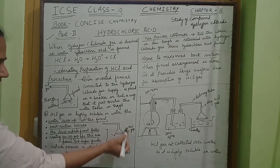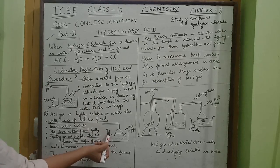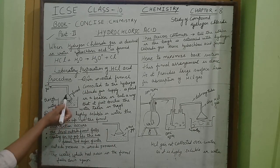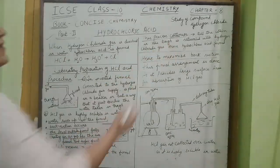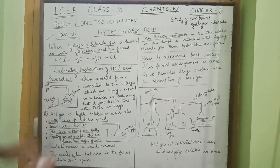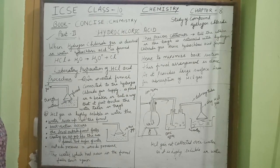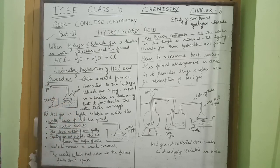An air gap is created, and the outside pressure equals the inside pressure. The water which has risen up in the funnel then falls back down. This process continues until the water in the trough is saturated with hydrogen chloride gas, and hydrochloric acid is formed in the beaker.